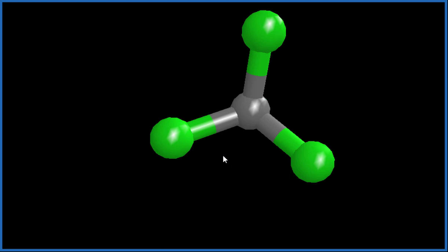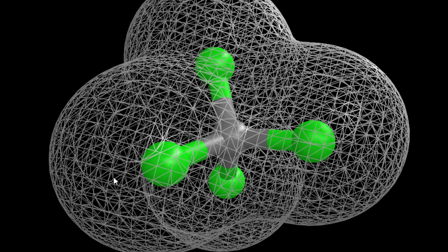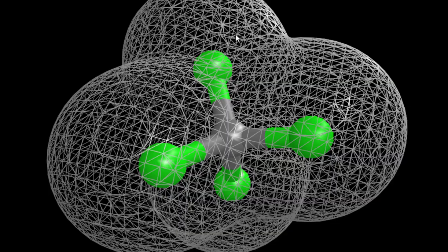If we look at the surface of the molecule, we can see that. So this shows us the surface, really where the charge is felt around the molecule, and you can see it's a uniform color. There's no difference in charge.